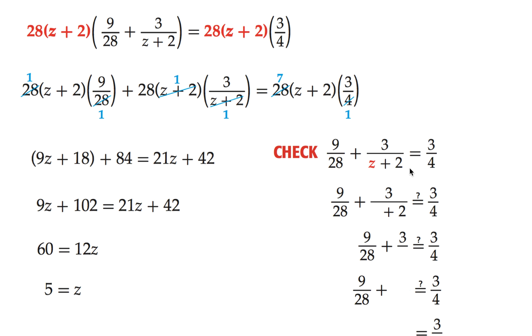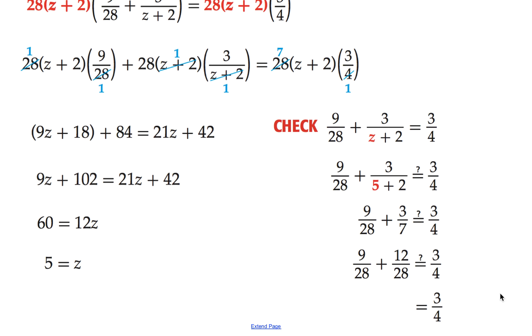So here's our original equation. Plugging in the value 5 wherever you see a z, and then getting like denominators here, we're going to multiply top and bottom by 4, so we get 12 28ths. And then lastly, adding these two together, we get 21 over 28, which is the same as 3 over 4. So that one does check.